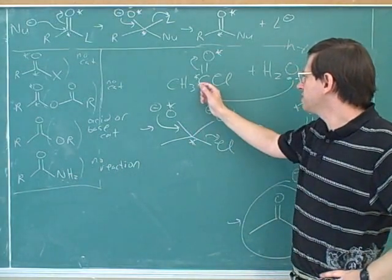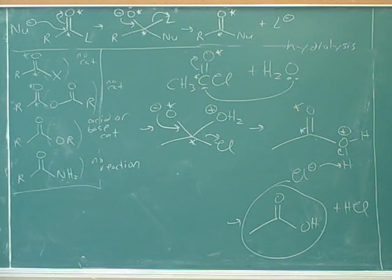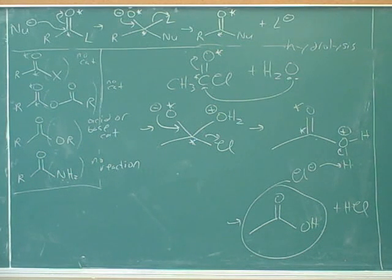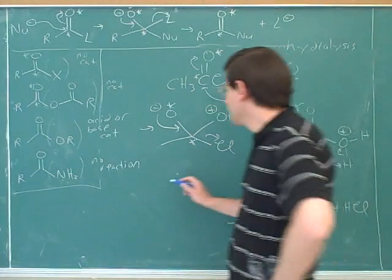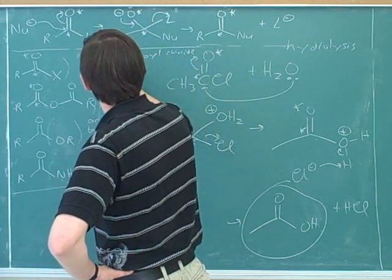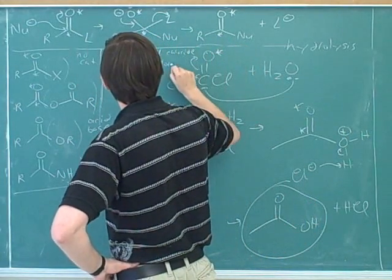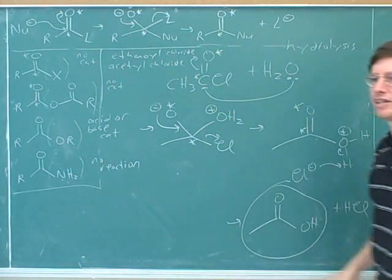As we keep practicing our nomenclature, what is the actual name of this substance? The IUPAC name would be ethanol chloride, but you're more likely to see the common name. The only thing that was tricky there is in the common name we use 'acetyl,' not 'ethanoyl.' This would be most commonly called acetyl chloride.